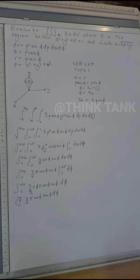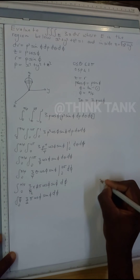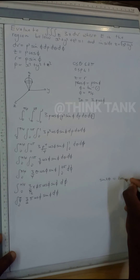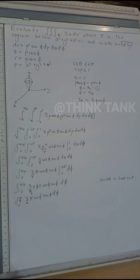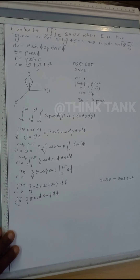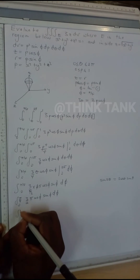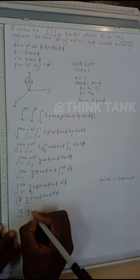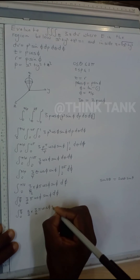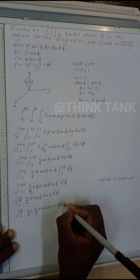To integrate this with respect to φ, I use the identity sin 2θ equals 2 cosθ sinθ. I need a factor of 2, so I multiply by 2/2 — the value doesn't change. This gives (2/2) times (3/2)π cosφ sinφ, which I rewrite as (3/4)π times 2 cosφ sinφ, which equals (3/4)π sin 2φ.